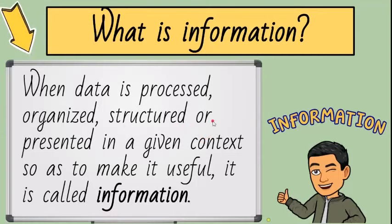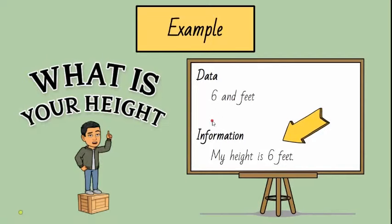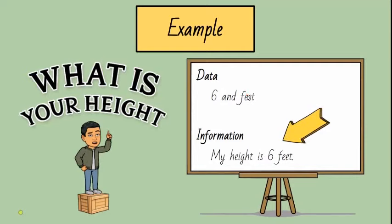Information is any knowledge that comes to our attention. Methods for conveying information could be voice, image, text, or video. Based on computerhope.com, information informs you of something. It answers a specific question. It represents a specific truth or fact. Data is the collection of recorded values from which information can be ascertained.